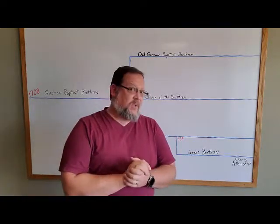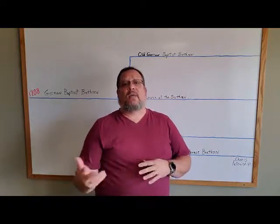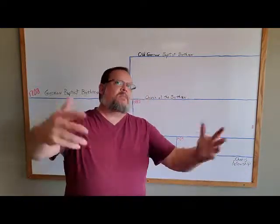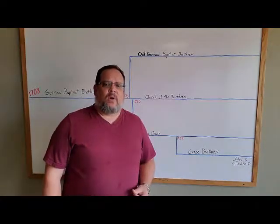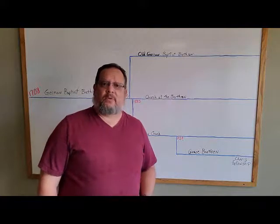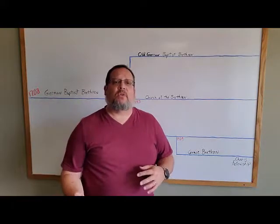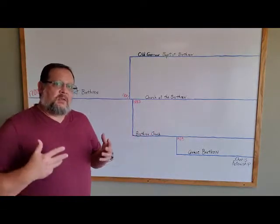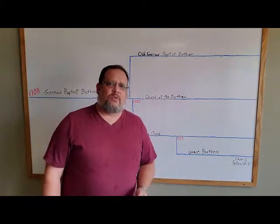They came to Pennsylvania but soon spread out to Ohio, Indiana, Illinois, even making it all the way to California. According to David Eller in the Brethren Encyclopedia, by 1880, there were 60,000 members of the German Baptist Brethren. America is where they came and where they grew.